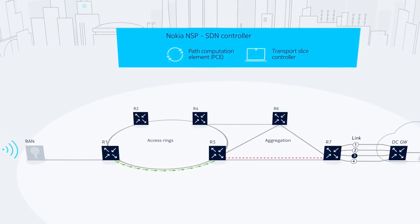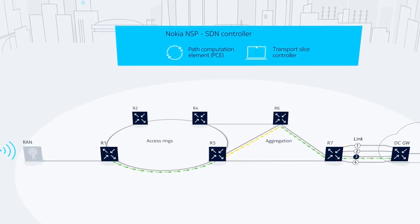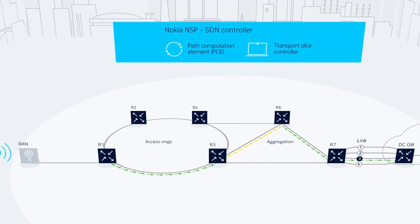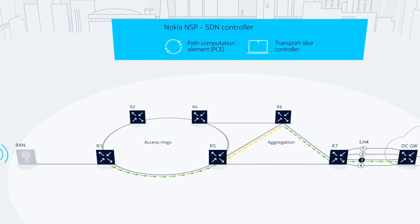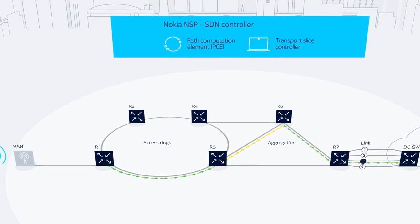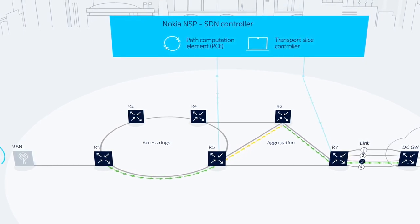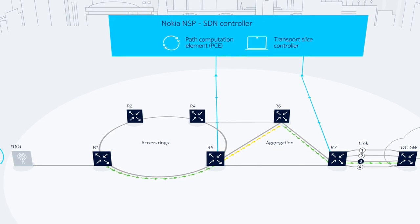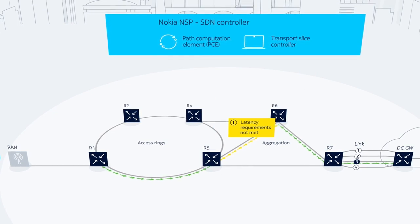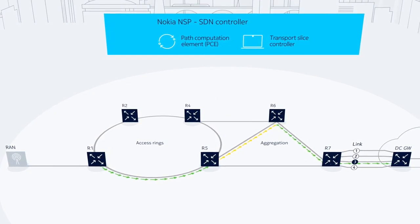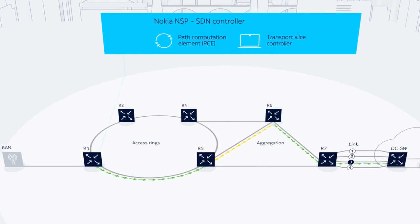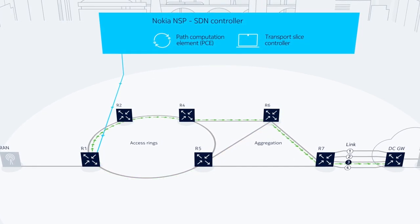If a fault occurs, the adjacent network routers will detect it immediately and will use a local fault recovery technique, such as the topology-independent loop-free alternate, to reroute traffic to the best available alternate path. The routers report the changing conditions to the NSP at the same time. Should there be an issue with this new path, the PCE will compute an alternative path that meets the SLA requirements, downloading a new label stack to the ingress node.